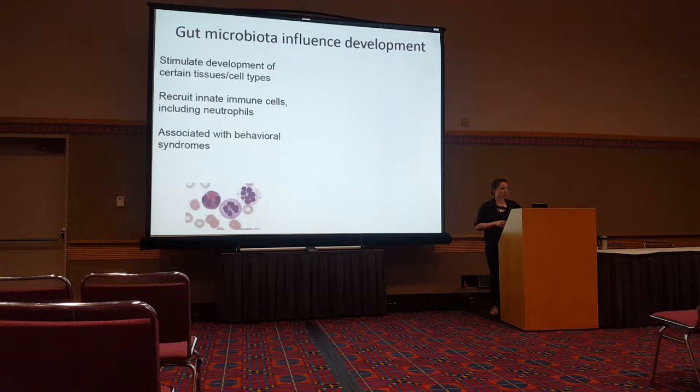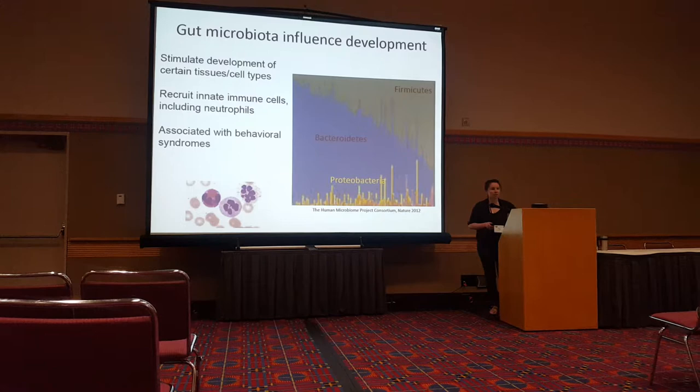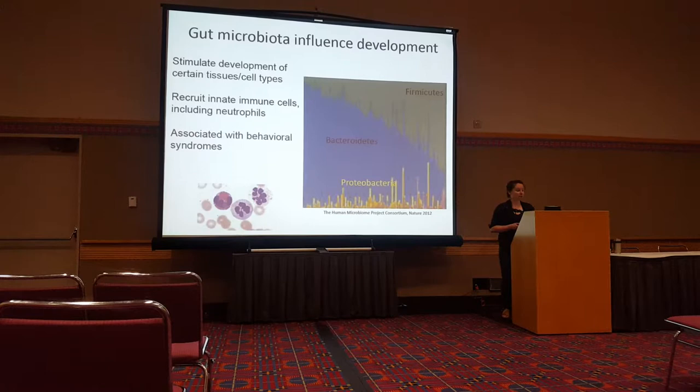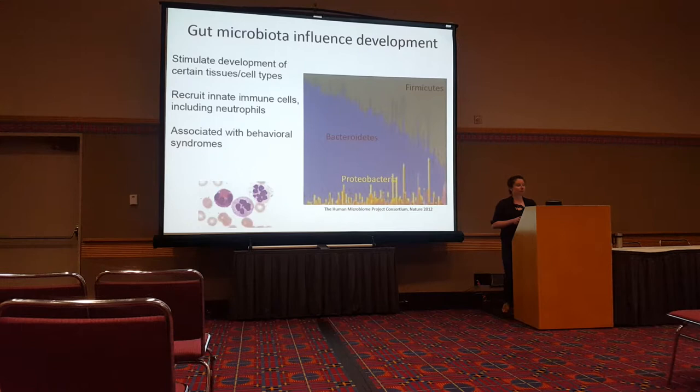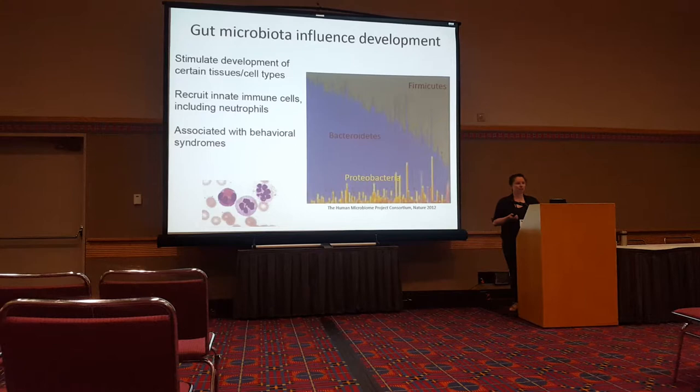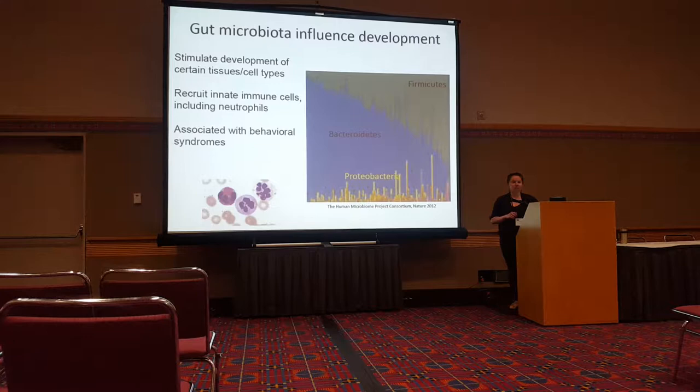We also see in surveys across taxa that there's a huge amount of variation in gut microbial diversity. In this example, a survey of human populations, each vertical line represents a different individual color-coded by the dominant bacterial taxa present. This diversity is controlled both by host genetic background as well as environmental variables such as diet.